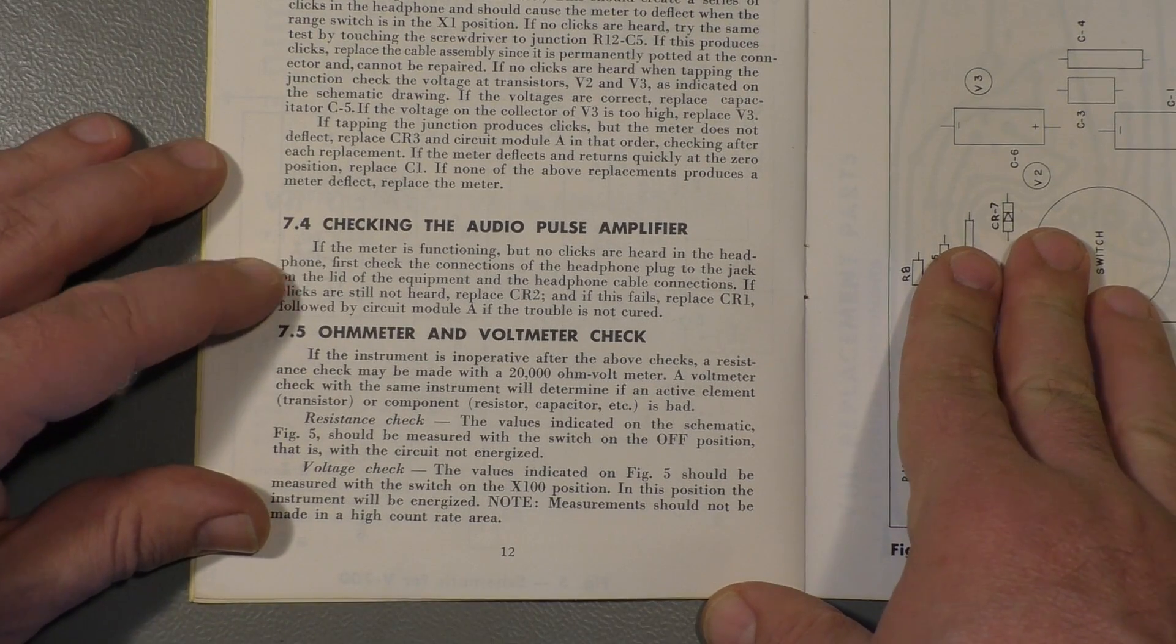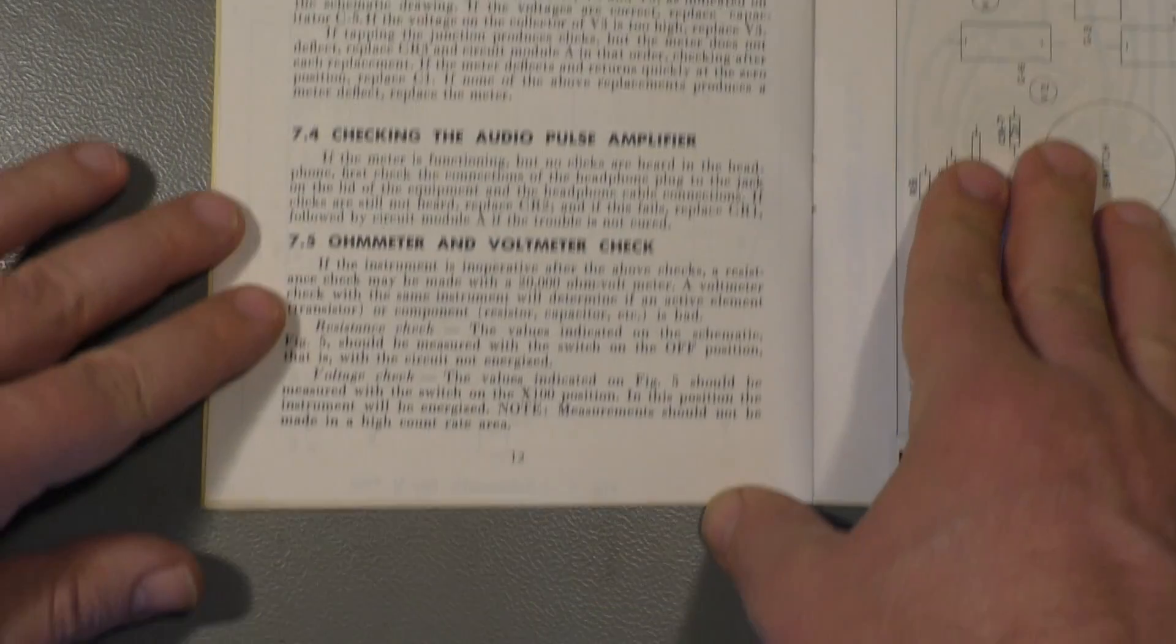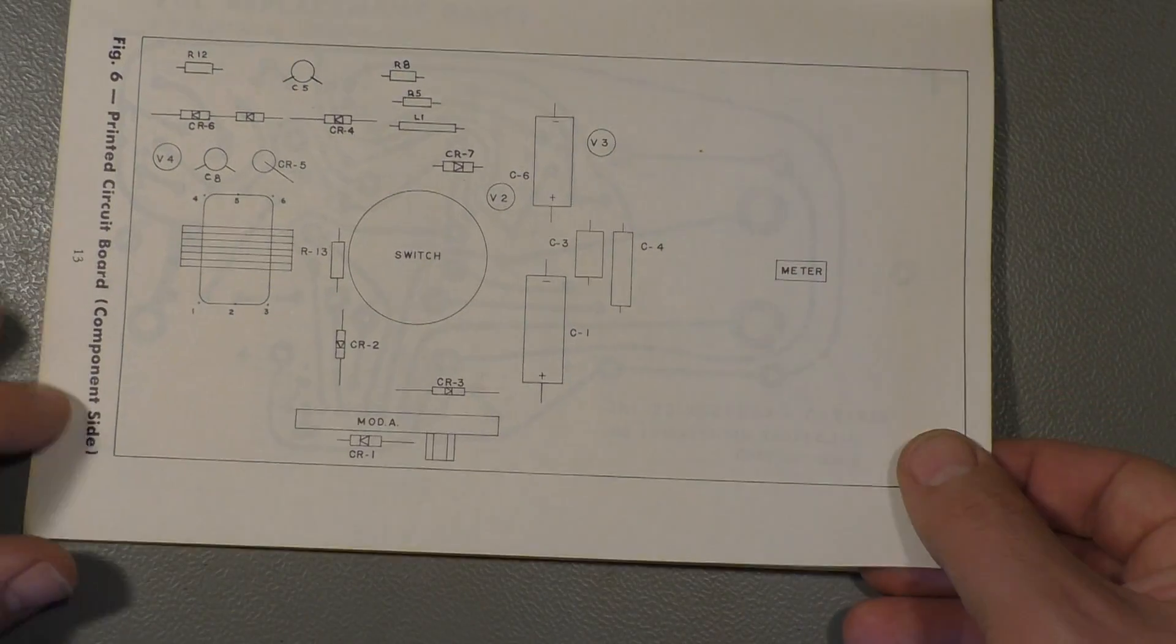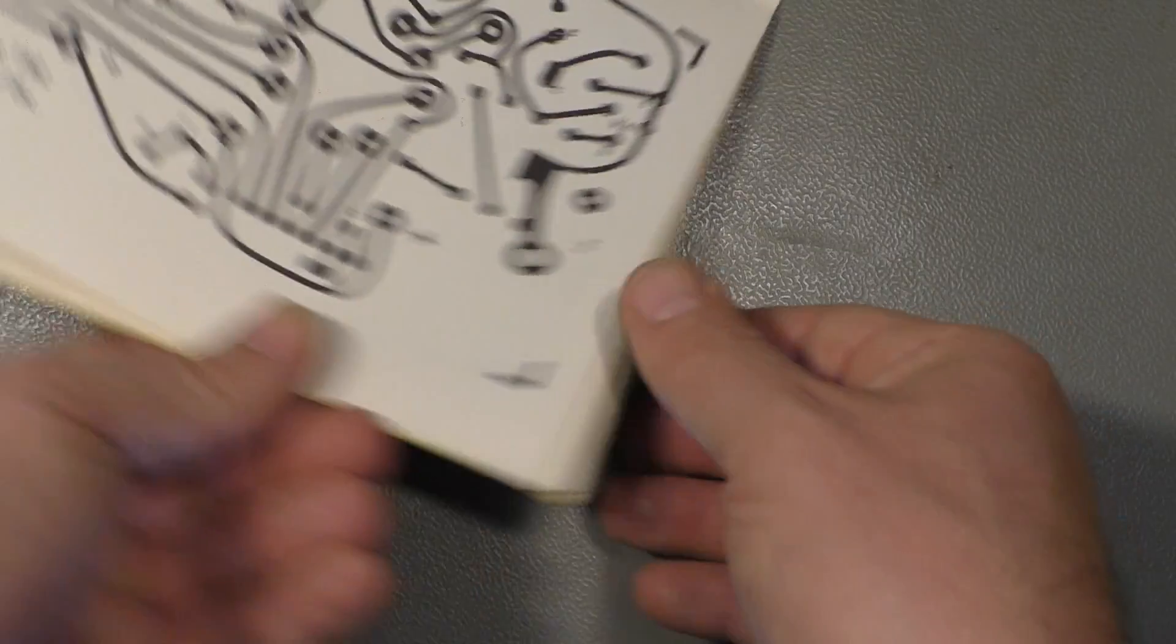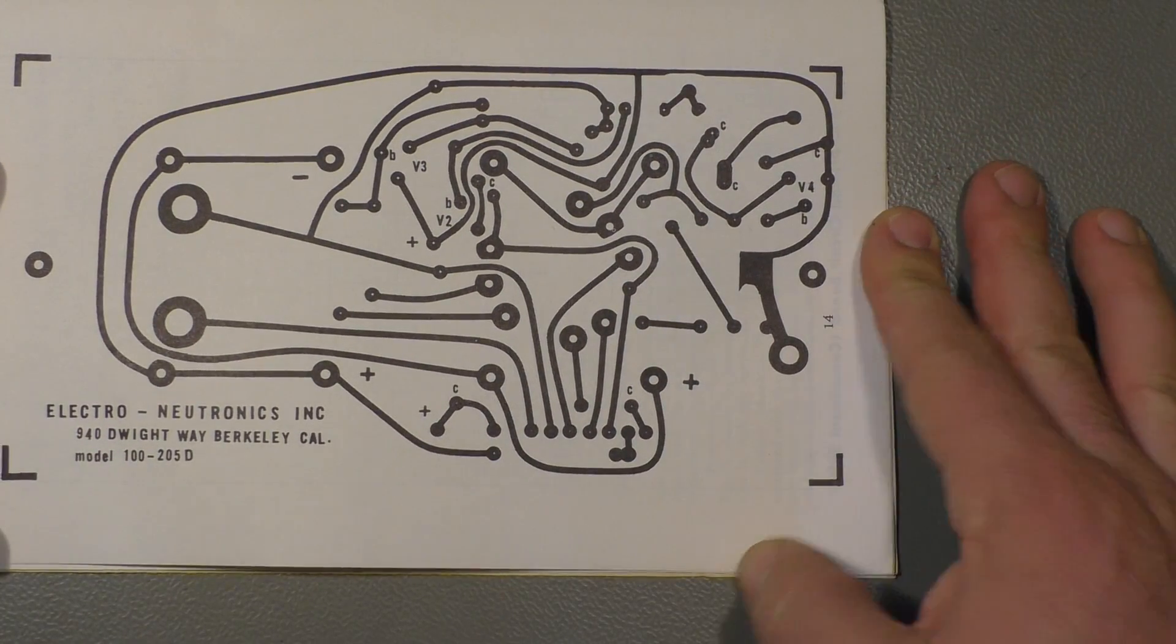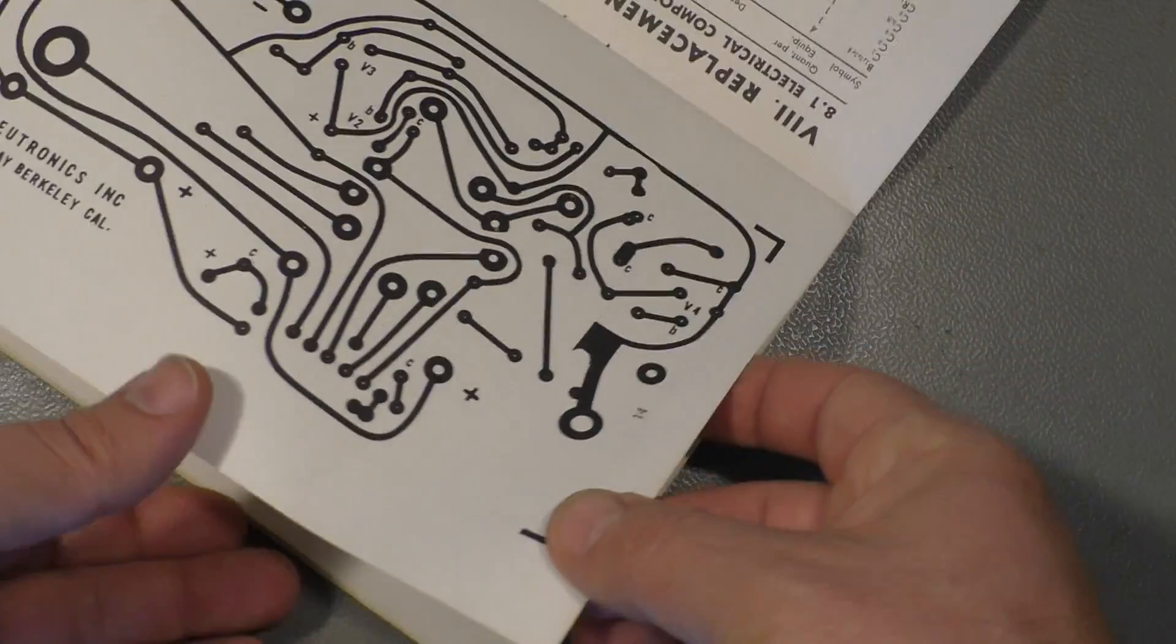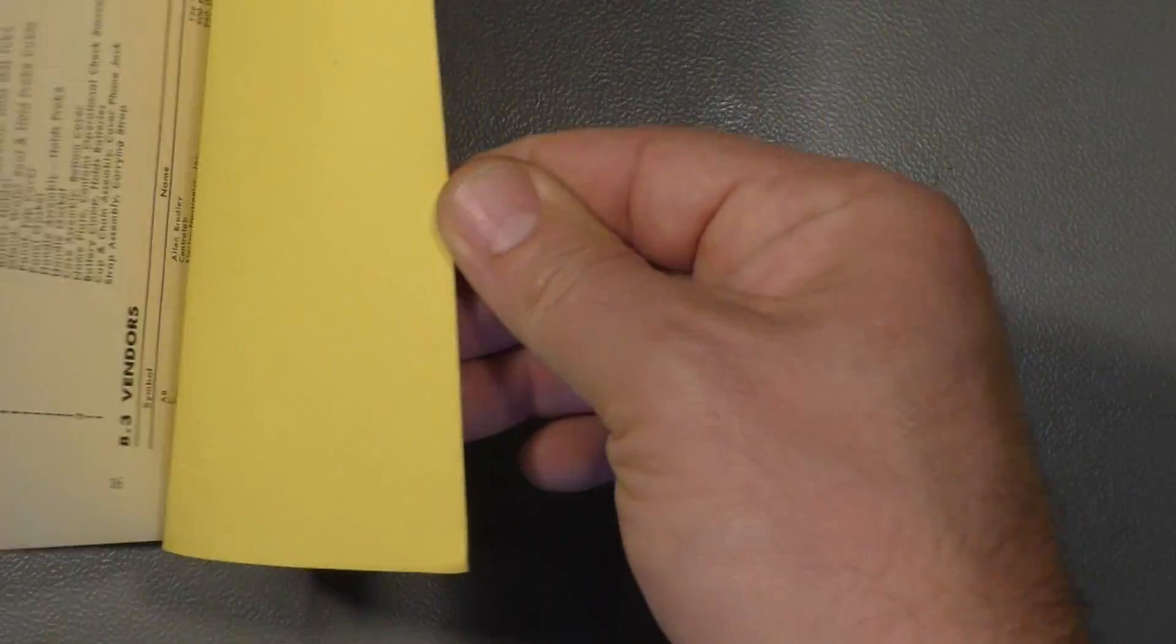Audio pulse amplifier, that's one of the two transistors we have. Ohm-meter, voltmeter check. There is the layout of the PCB. And also the layout of the tracks. As I said, if you want, you can make your own. That's about it.